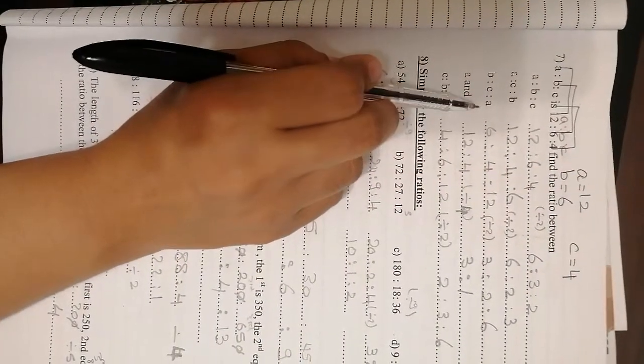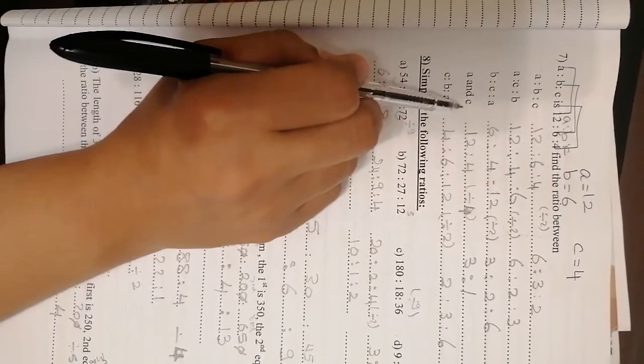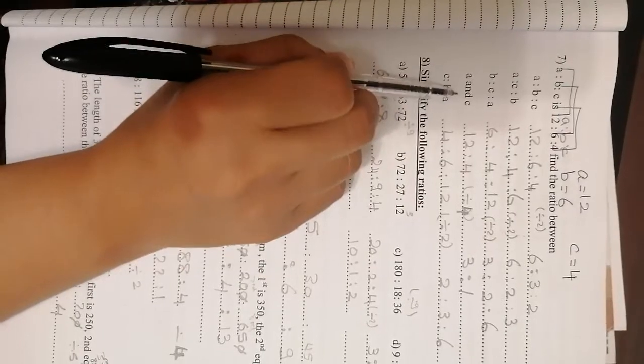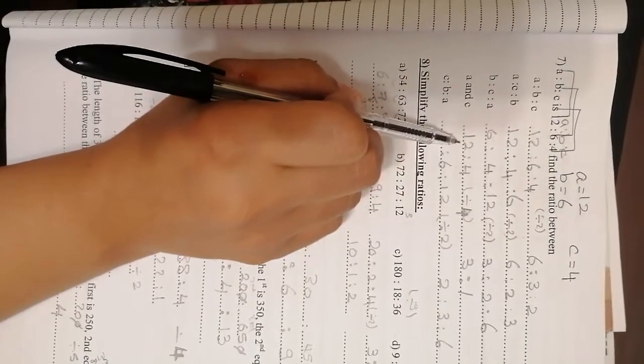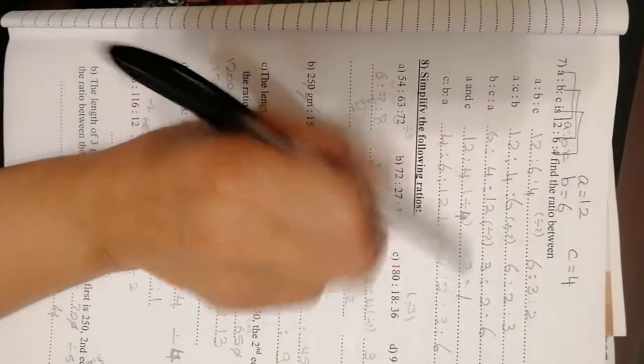B to C to A, same. Here you want A and C. So A is 12 and C is 4, so it's 12 to 4 and order is very important. 12 and 4, they are divisible by 4. 12 divided by 4 is 3 and 4 divided by 4 is 1. So the answer is 3 to 1.